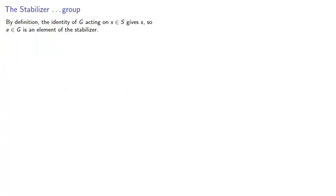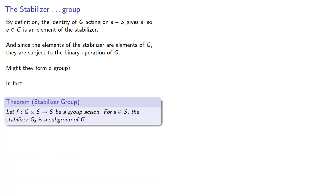Now, by definition, the identity of G acting on an element of S gives us S. So, the identity of G is an element of the stabilizer. And since the elements of the stabilizer are elements of G, they're subject to the binary operation of G. And so, the question you've got to ask yourself is, might they form a group? And in fact, they do let F be a group action for any element of S, the stabilizer of S is a subgroup of G.